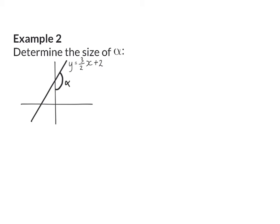Example 2: Determine the size of alpha. Once again here, we need to realize that alpha is not an inclination angle because it's not measured from the x-axis or the horizontal line. Therefore we need to add our own horizontal line.